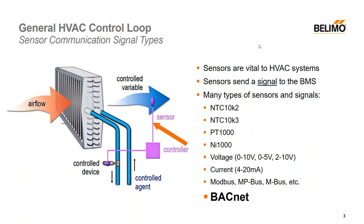Beyond these analog signals, there are also many different types of communication protocols available such as BACnet, Modbus, MBUS, and MPBUS, which is really specific to Belimo. There are also many other proprietary signals out there. There are many advantages to using communication protocols like BACnet in the realm of installation, wiring, and control. This leads us into the next slide on exactly what BACnet is and really where did it come from.